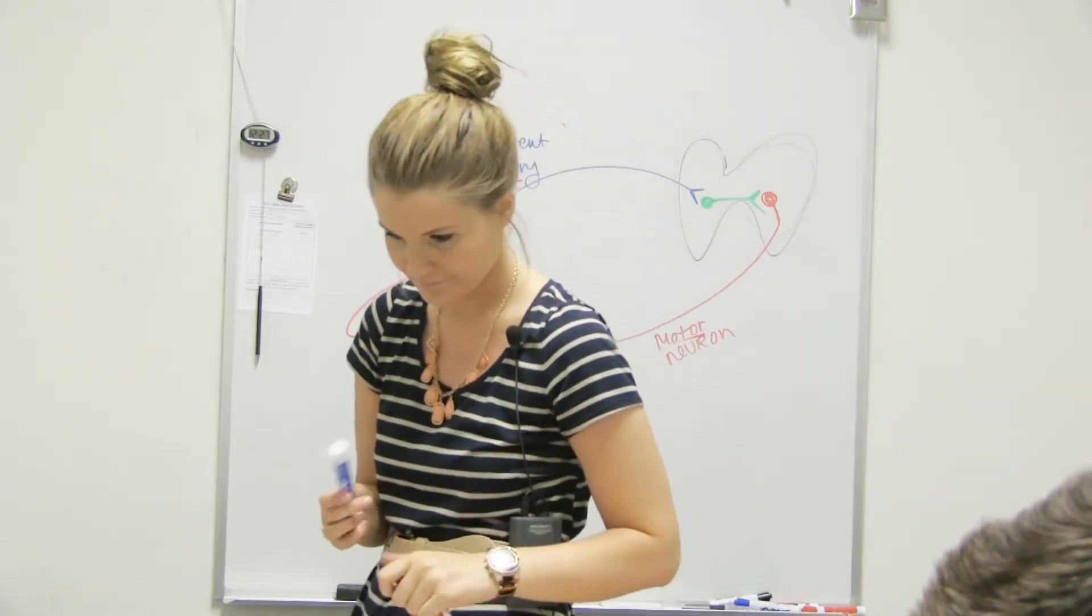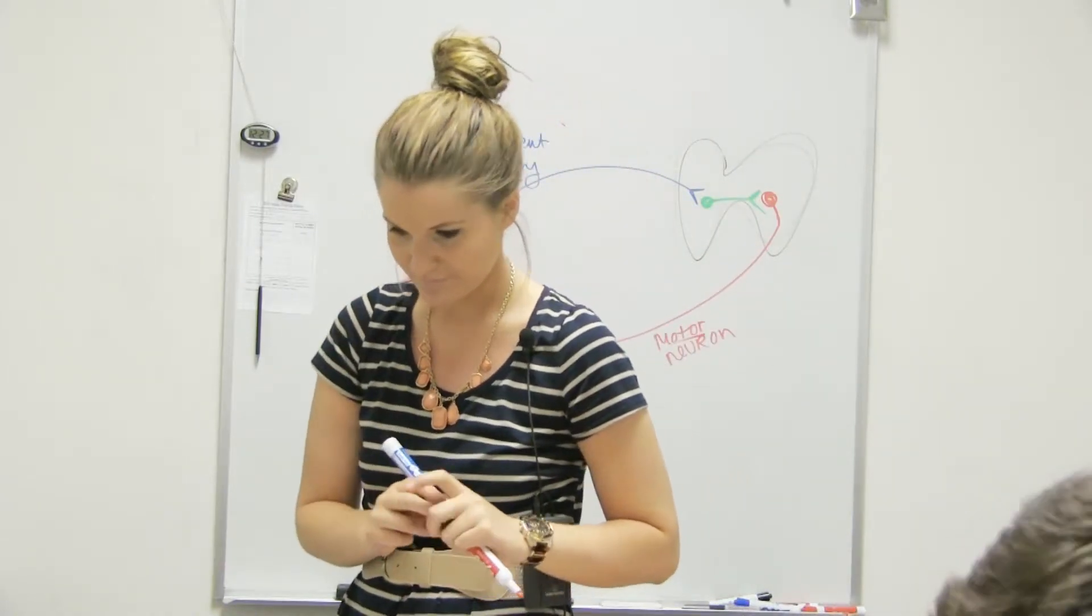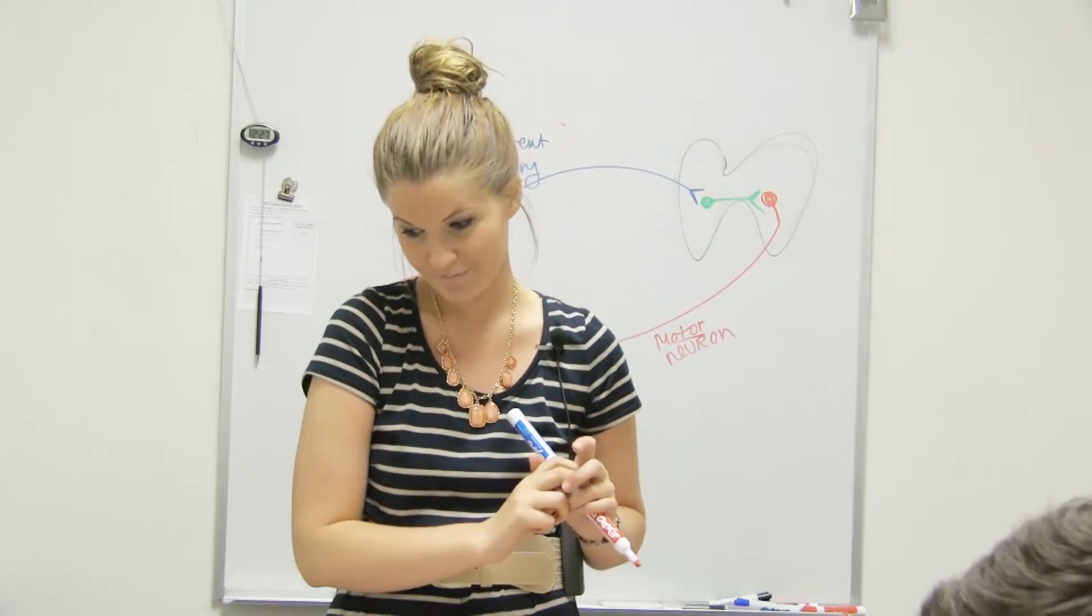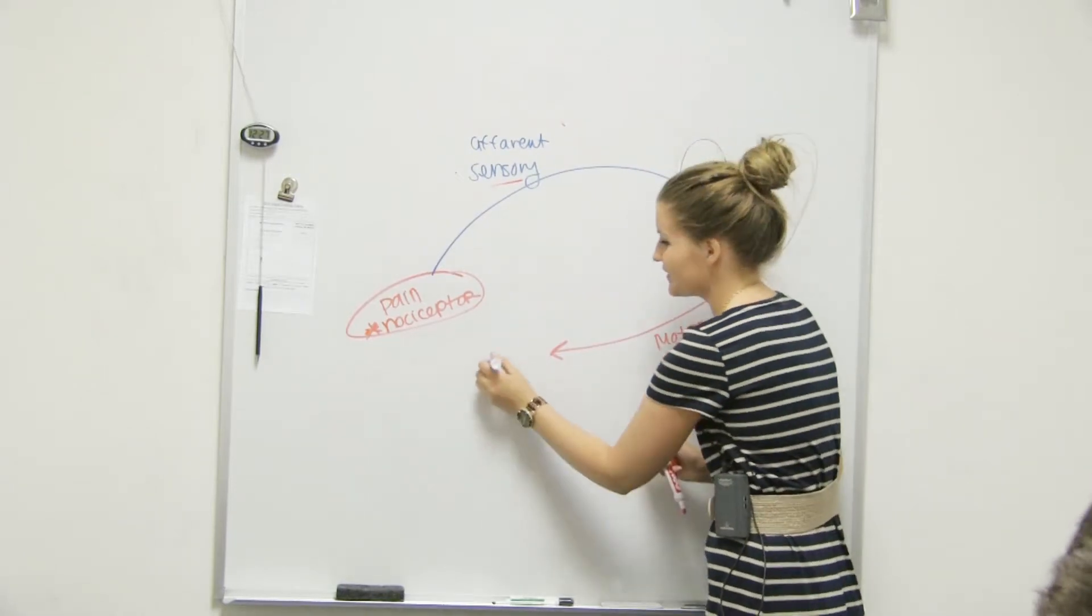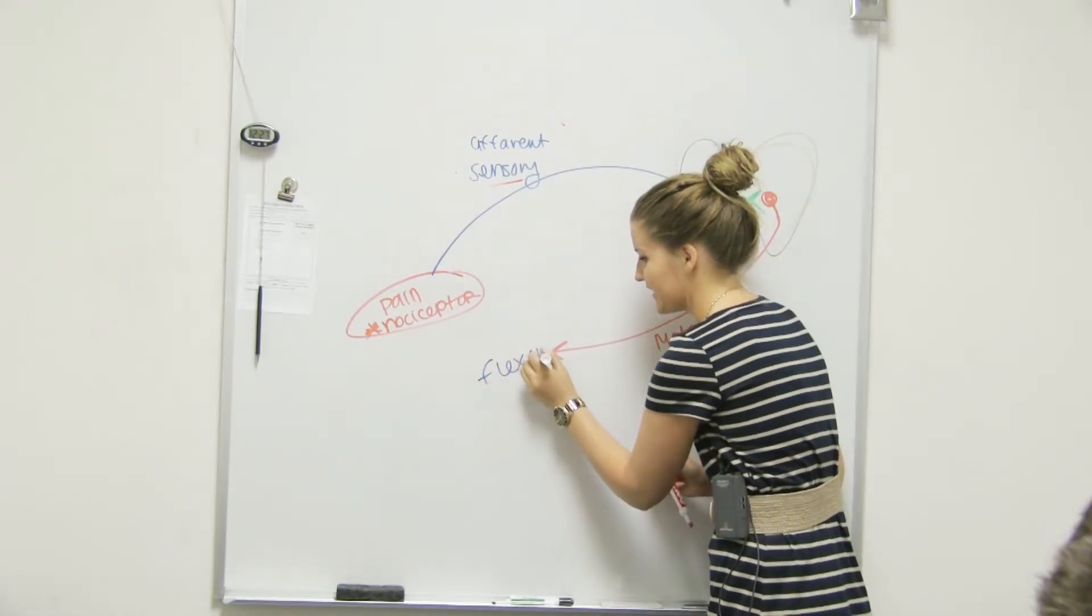Motor neuron goes where? To the receptor. No. Flexor. It's going to go to a muscle of some kind. It's going to go to a muscle, which is our flexor.